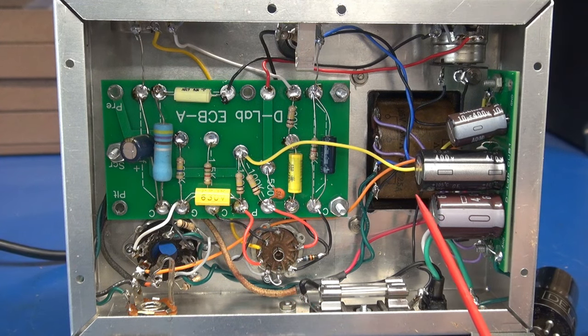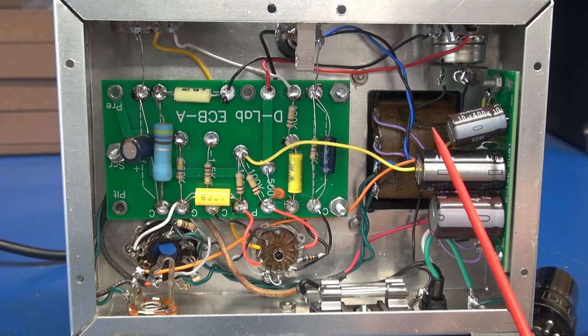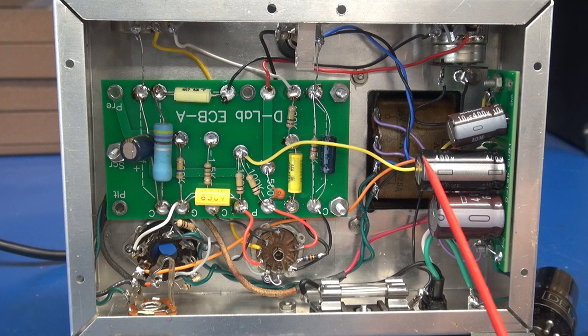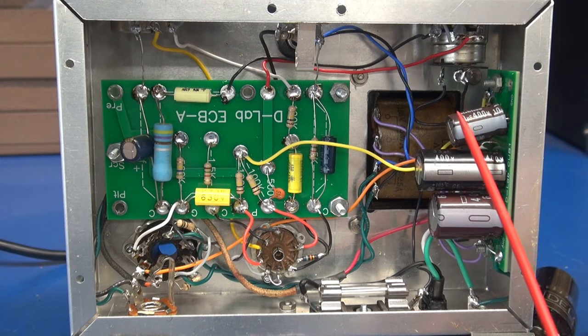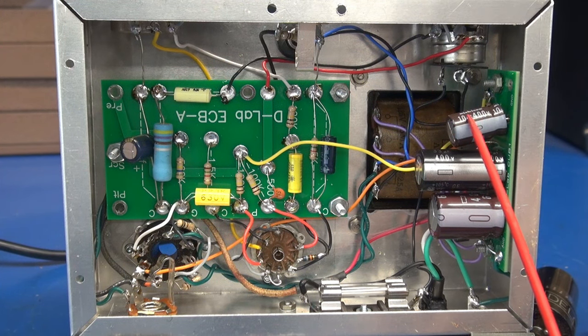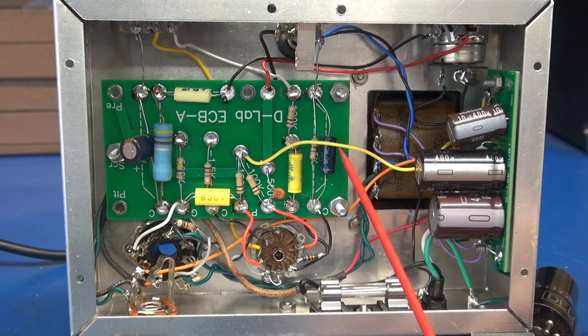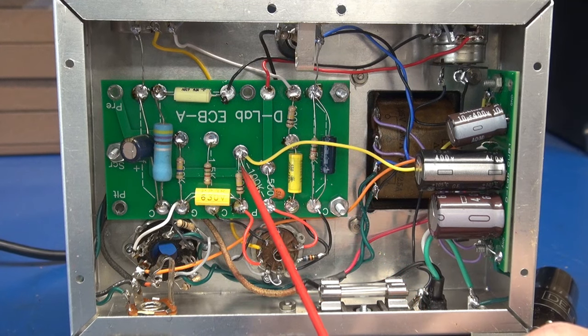Then, we go through a 1K resistor, and then we hit this cap, and then the orange line you see comes off that junction. That's the screen feed for the 6V6. Then, we go through a 10K resistor, and we have another 10 microfarad cap, and that shoots over here. The yellow line, that's my preamp voltage.